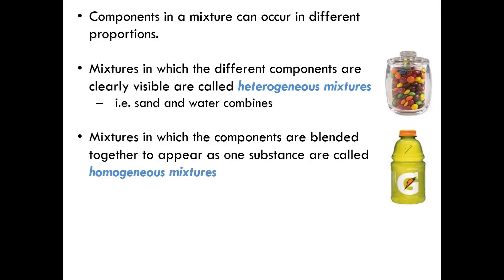Mixtures in which the components are blended together to appear as one substance are called homogeneous mixtures. The example I have here is Gatorade. Now, Gatorade is made of a mixture of several different types of matter. But of course, we only know it as yellow or blue or red Gatorade. Other examples may be clean air or salt water or grape juice. Now, air is made up of several different types of elements, but we can't tell because it's a homogeneous mixture. Grape juice, for instance, has grape extract mixed in with water. We just know it as purple drink.